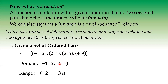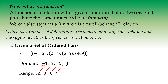And for our range, those are the y values: two, positive three, positive six, and positive nine. Now, negative one is paired with two, two is paired with three, three with six, four with nine. So meaning we have unique x values for each y value. Therefore, this ordered pair represents a function.